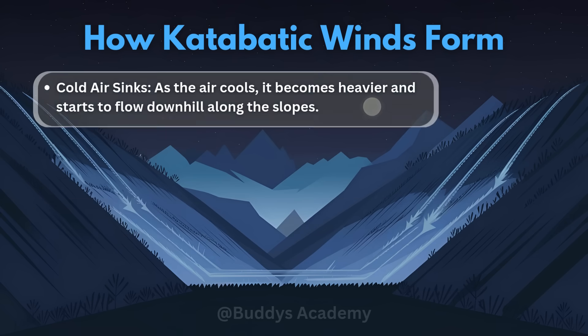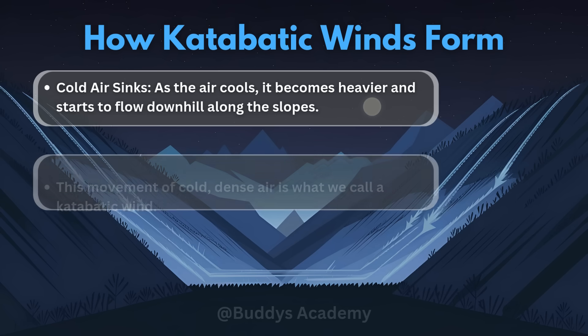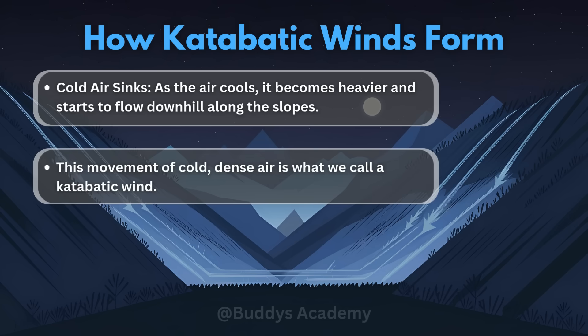The second point states cold air sinks. As the air cools, it becomes heavier and starts to flow downhill along the slopes. This movement of cold, dense air is what we call a katabatic wind. Remember, gravity is going to pull this heavy air down the slopes, and that is basically how we get the downslope movement.